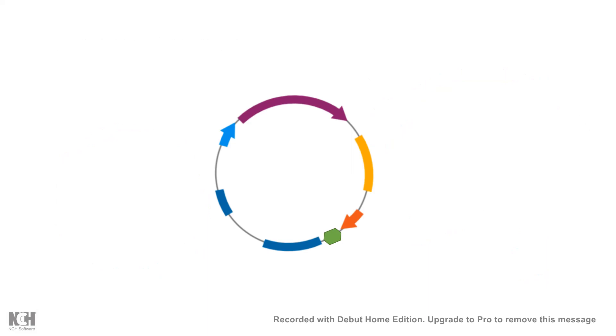Other than that, this plasmid should be replicated into both the hosts. So if it is between bacteria and yeast, it should have bacterial origin of replication, a selectable marker in bacteria, for example an antibiotic resistance gene.